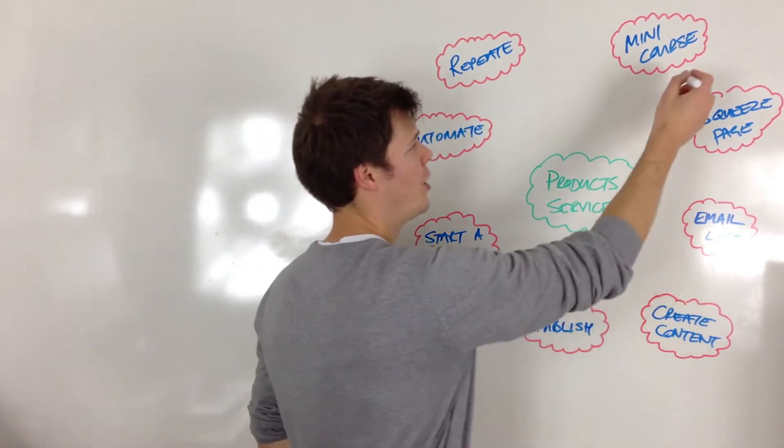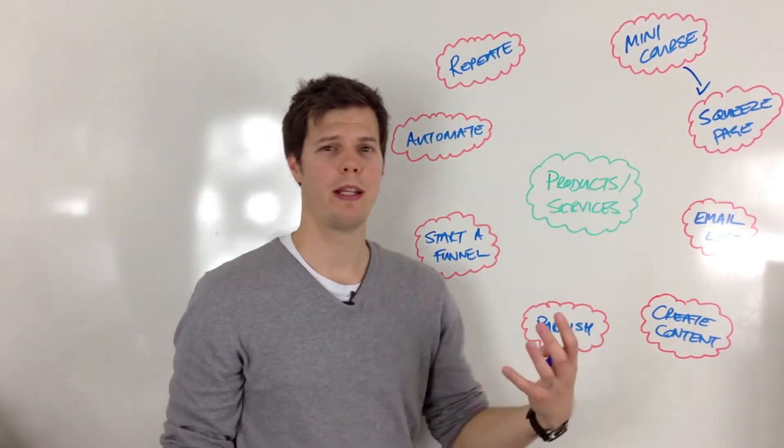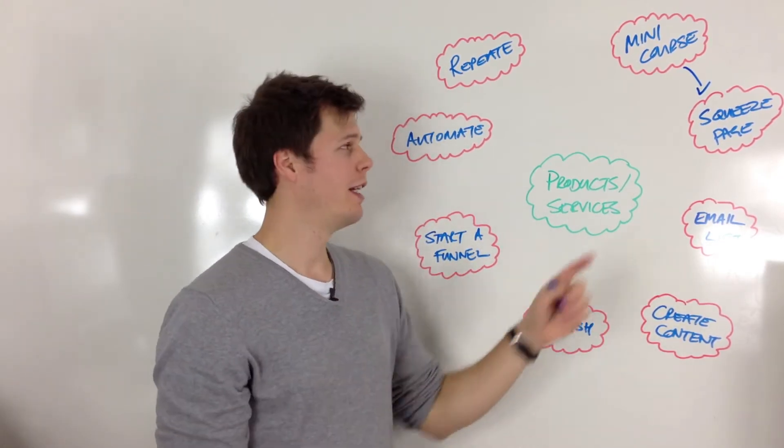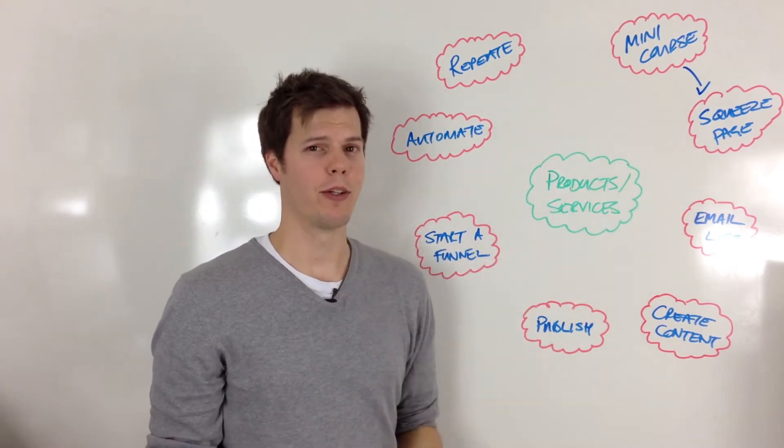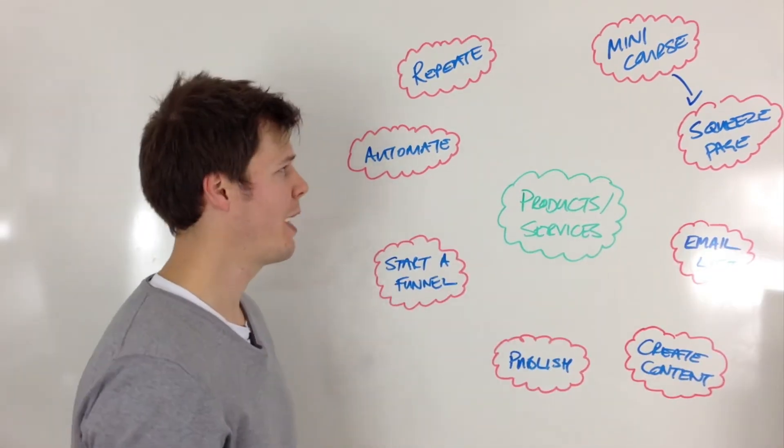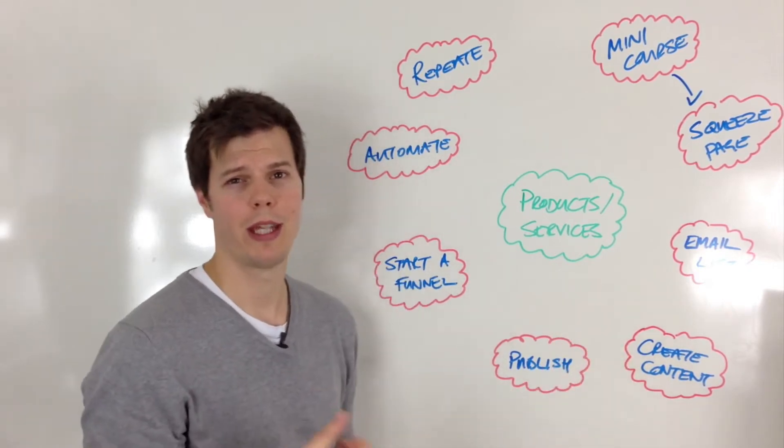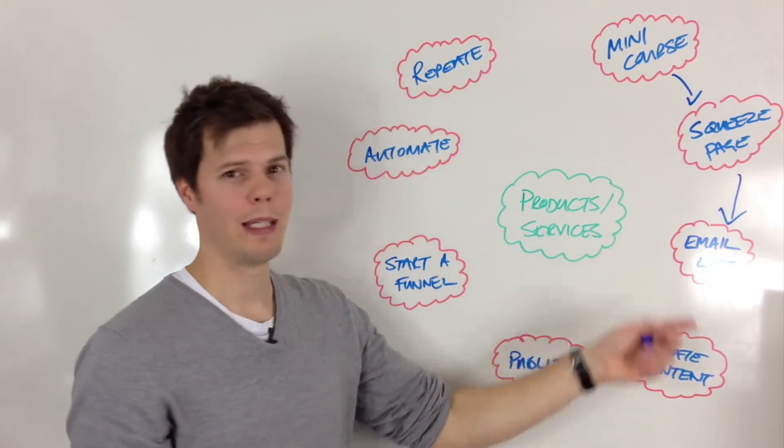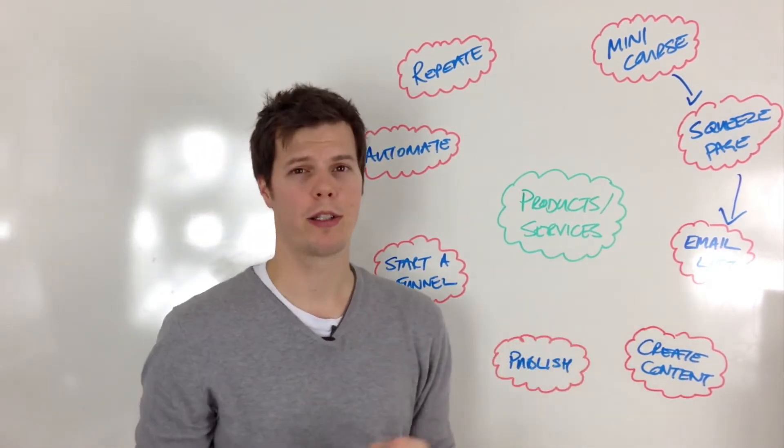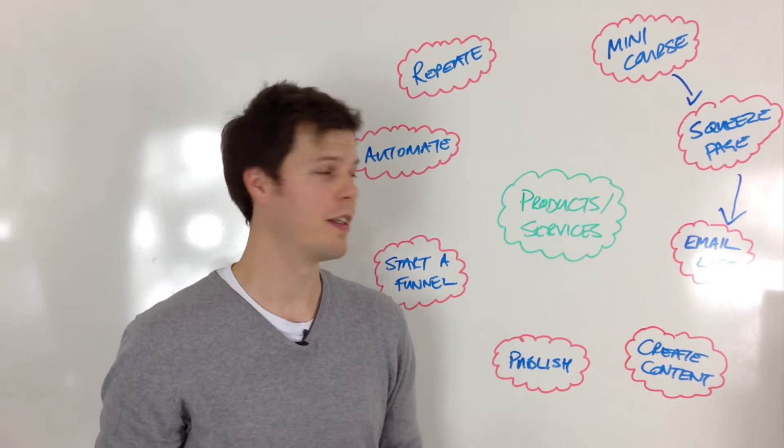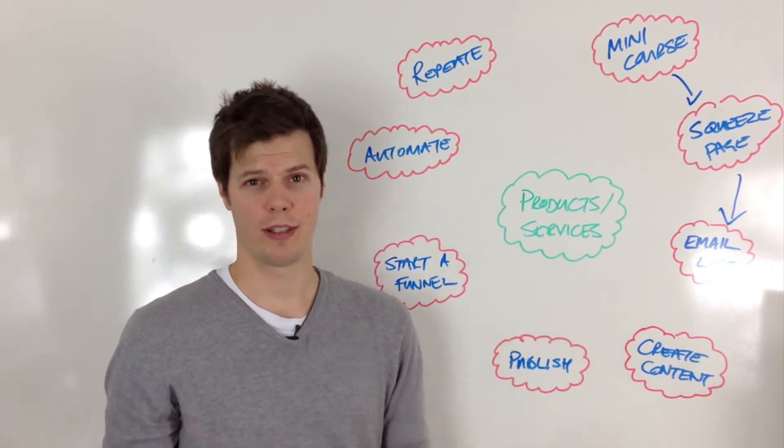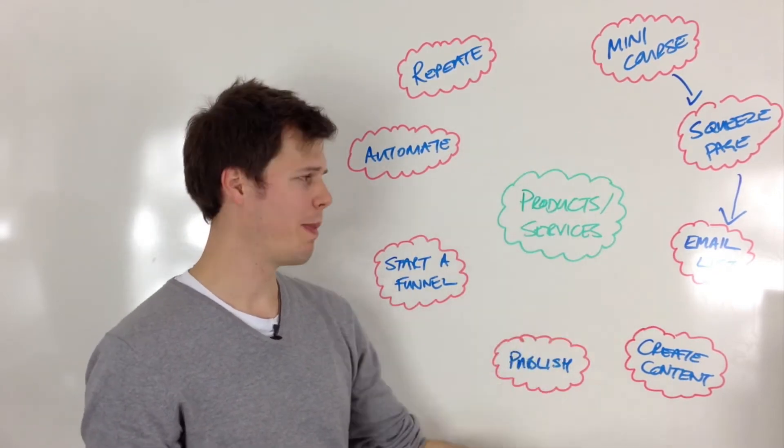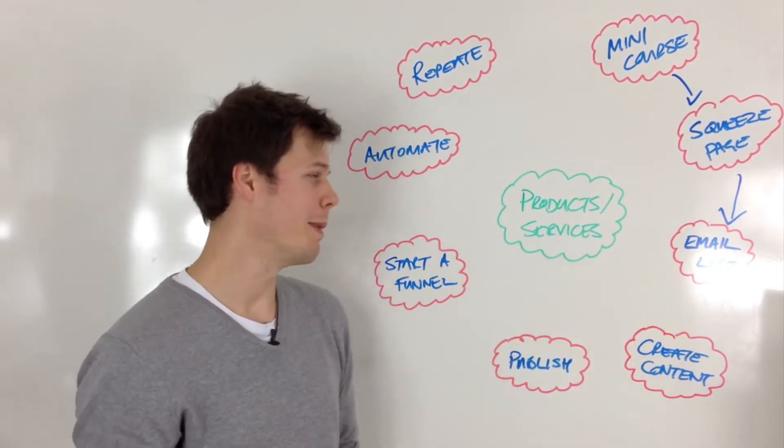Once you've got the mini course, you're going to need a squeeze page. By squeeze page, what we mean is an area where people can put their name and email address on the website to get access to your mini course. You need a squeeze page set up, some kind of website, basically where someone puts their name and email. The reason we do this is because it builds your email list. This is going to be one of your best marketing tools for telling people about your products and services that you've already got complete and you want to sell.